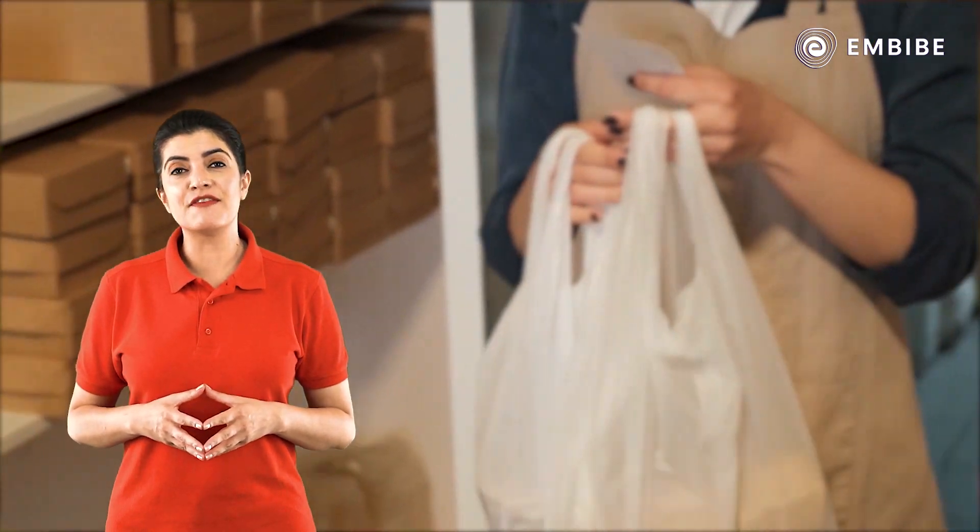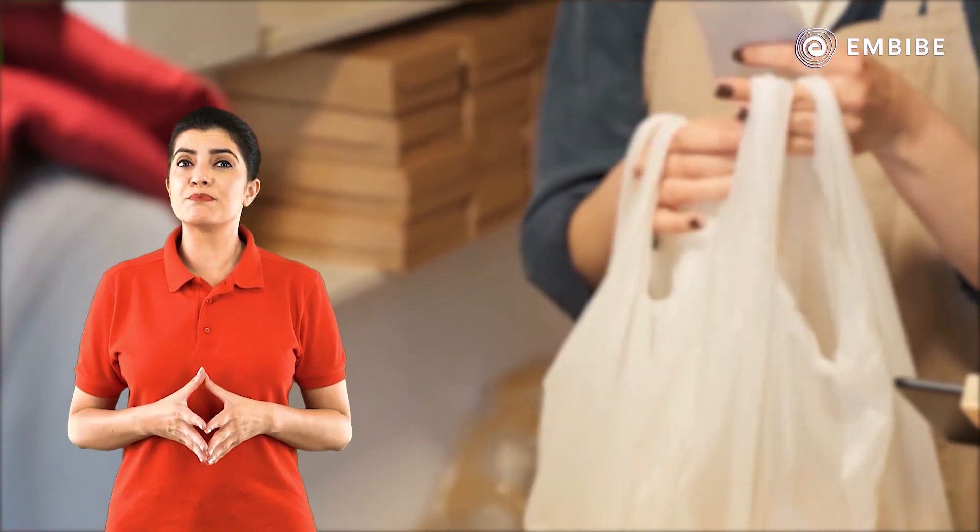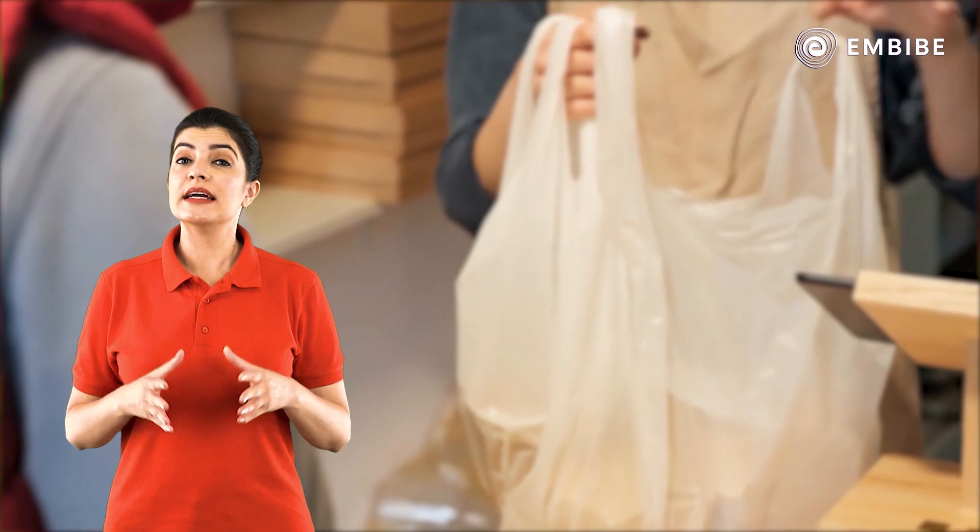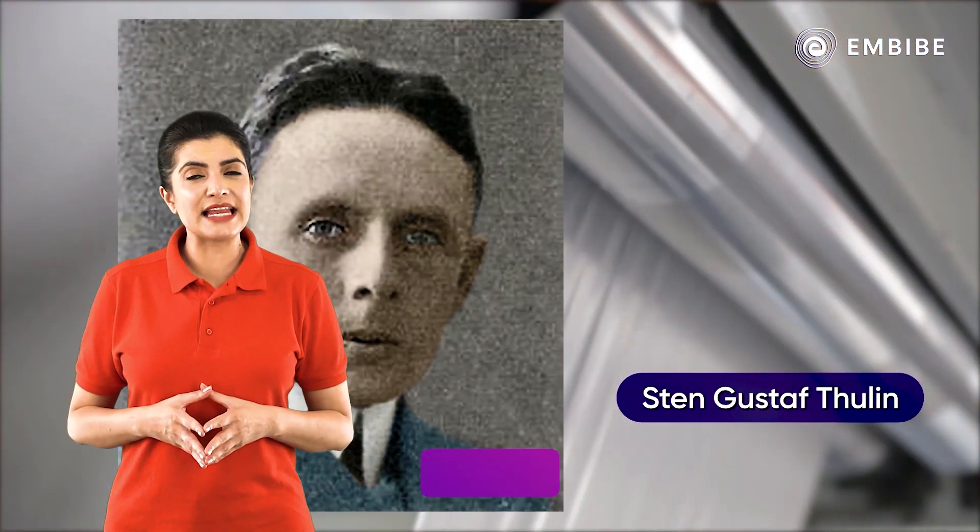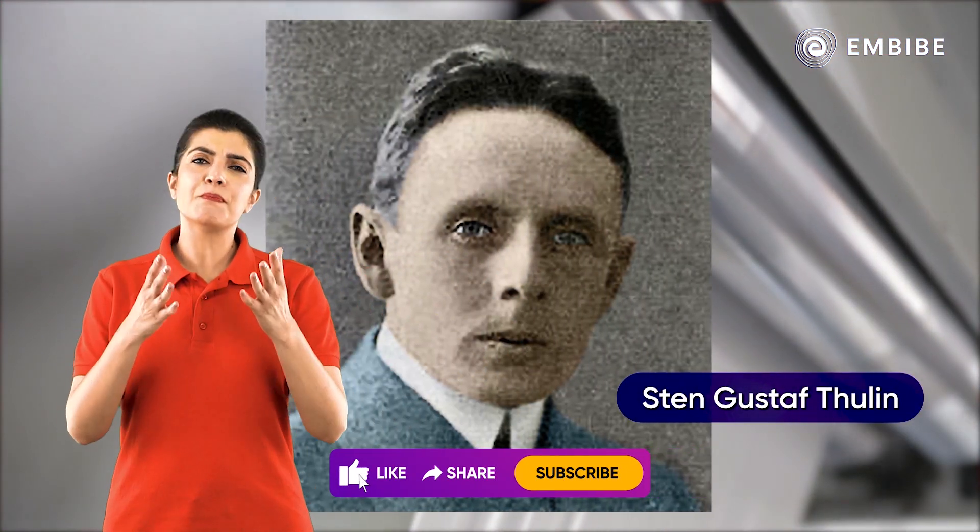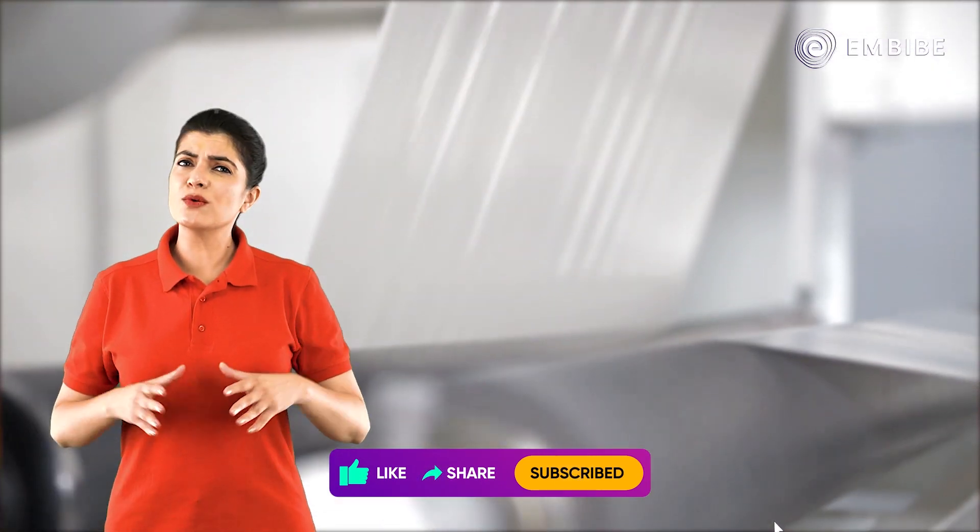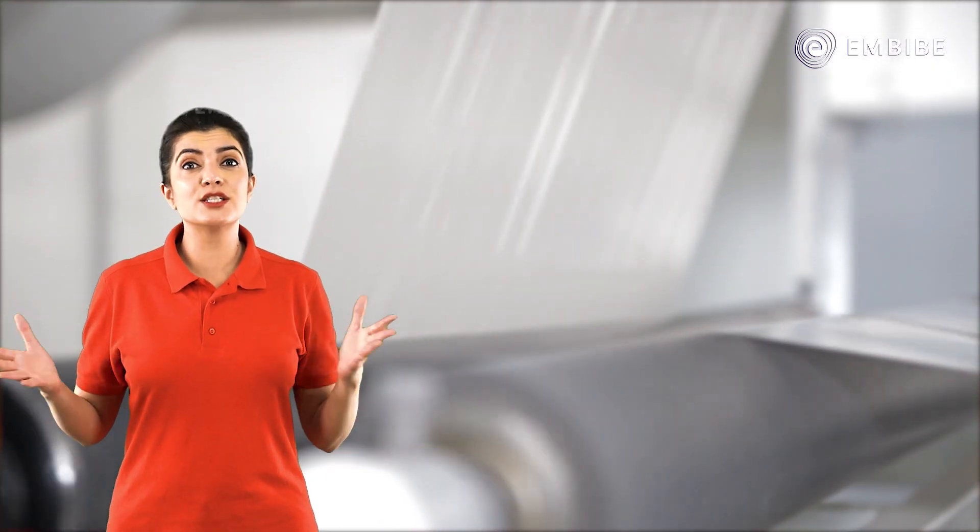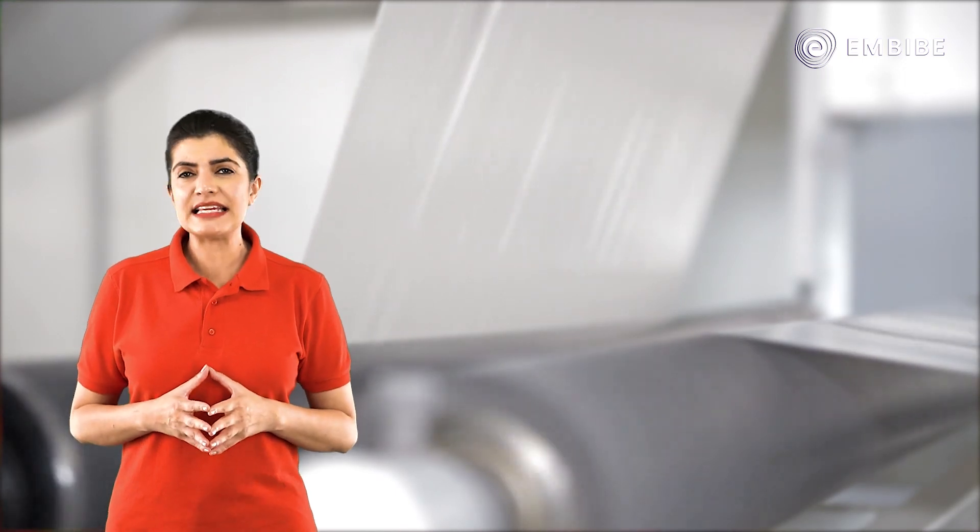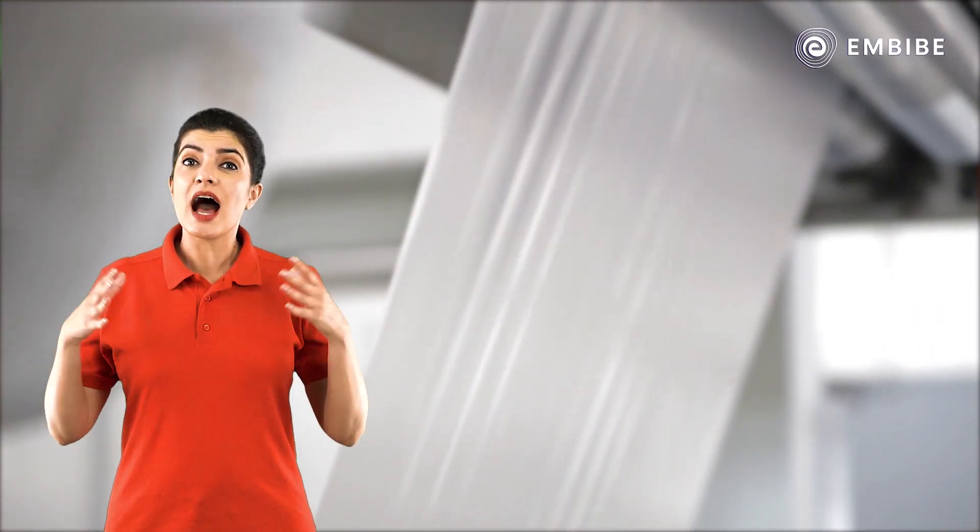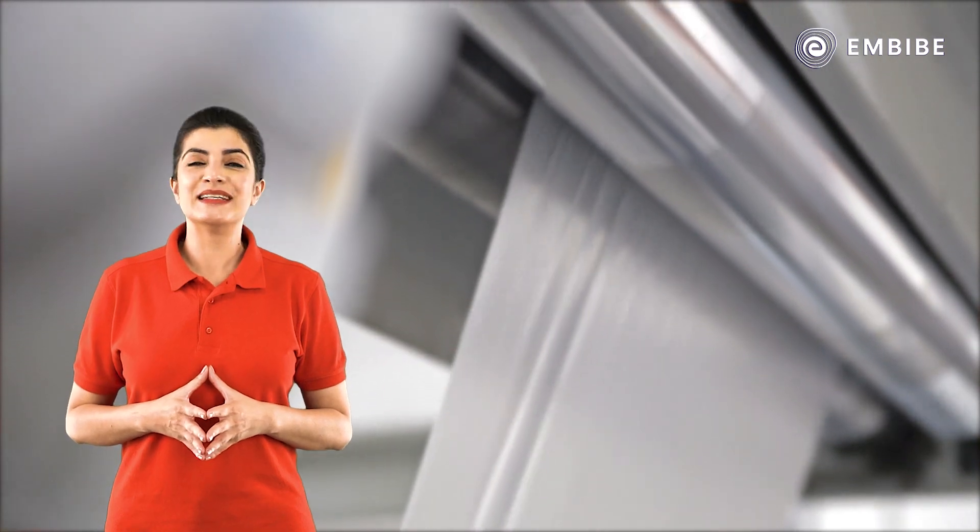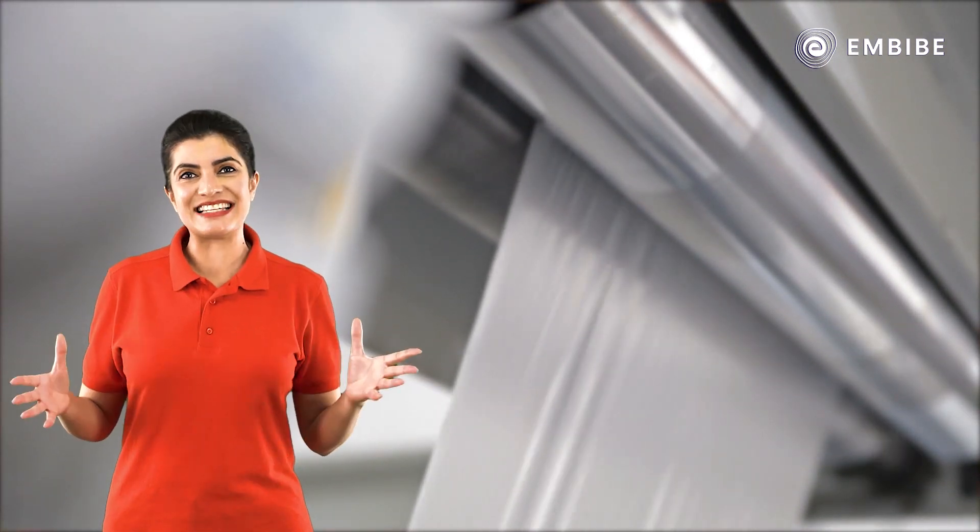In 1965, the one-piece polyethylene shopping bag designed by engineer Stan Gustav Thulin was patented by the Swedish company Celloplast. Soon they replaced cloth bags due to their portability and ease of carry. But how are these bags formed? Let us learn about it in detail.